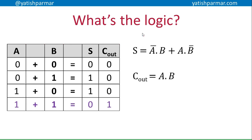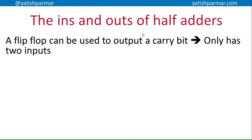Looking at that truth table - the Boolean logic is: S equals (NOT A AND B) OR (A AND NOT B), because it's an XOR gate. And the carry-out is simply A AND B.